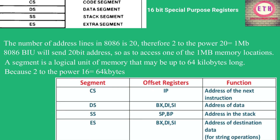In this table we can see the offset registers used in each segment and their functions. There are three columns: segment, offset register, and function. In the code segment, the Instruction Pointer (IP) addresses the next instruction. In the data segment, BX, DI, and SI are the offset registers — BX is the base register, DI is the destination index pointer, and SI is the source index pointer — used for addressing data.